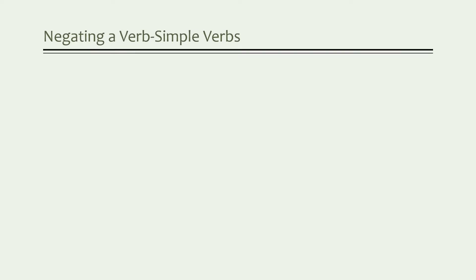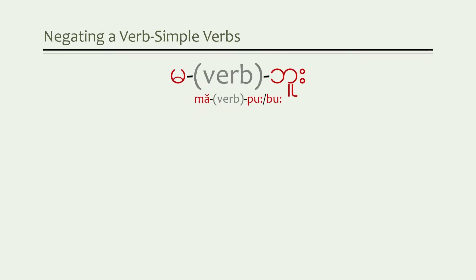In the lesson on the affirmative particle, you learned that there's a particle added to the end of the verb to complete a sentence. Here's what we add to form a negative statement — the negative form of a verb. In a negative statement, there are two particles required: one that appears before the verb and one after. They work as a pair and are combined with both verbs and adjectives, as you'll see in this lesson.